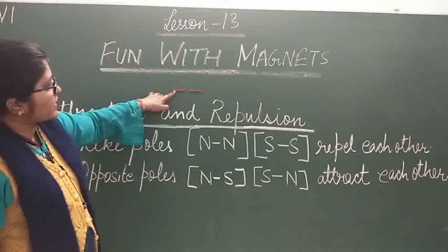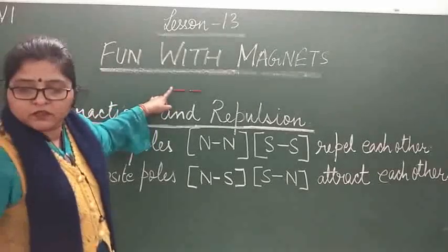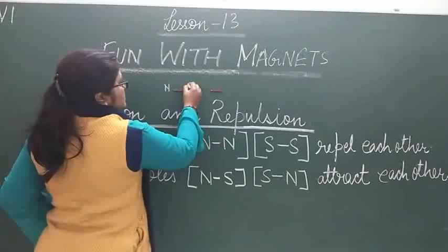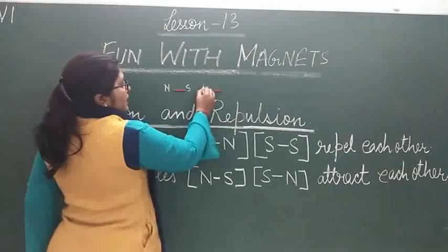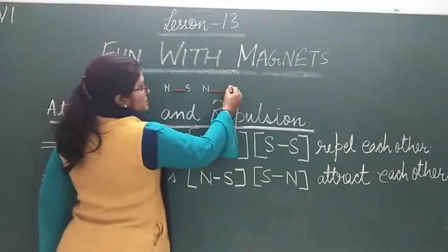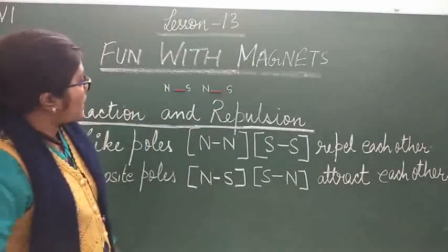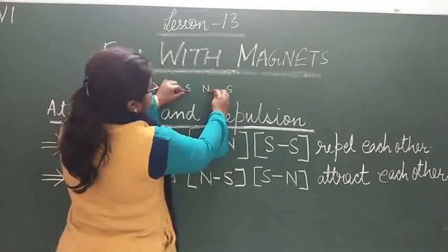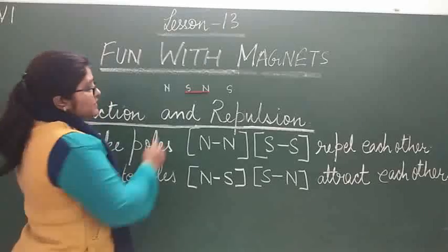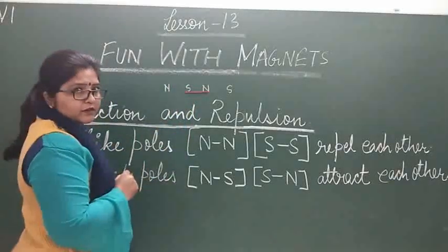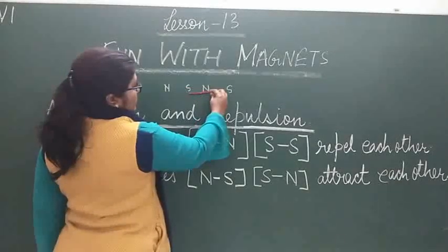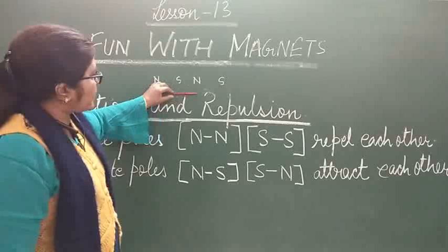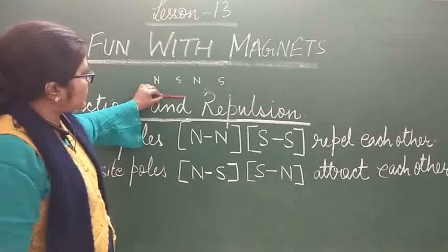You can see a dot on one bar magnet — this means it is the north pole of the magnet. This is the south pole of this magnet, and here again we have the north pole and south pole. Now when I bring this magnet near the other magnet — you can see these two magnets join, and if I pull one magnet, the other comes with it.